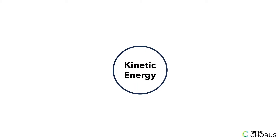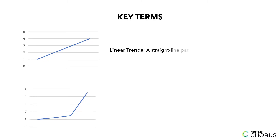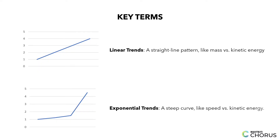By the end of this tutorial, you'll graph your data to uncover patterns — some are straight lines, and others curve dramatically. Here are the key terms. Linear trends: a straight-line pattern, like mass versus kinetic energy. Exponential trends: a steep curve, like speed versus kinetic energy. Graphs help us see these relationships clearly, and they're a superpower for any scientist.